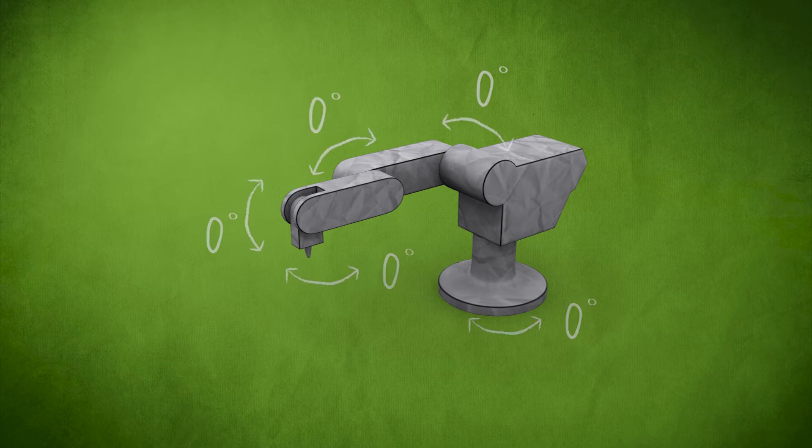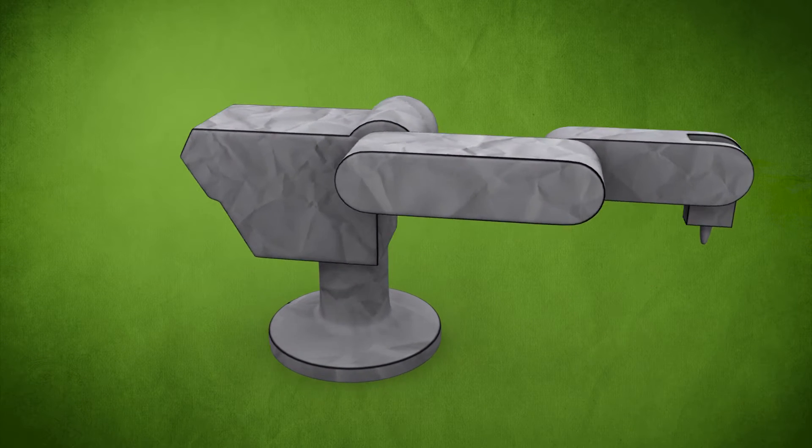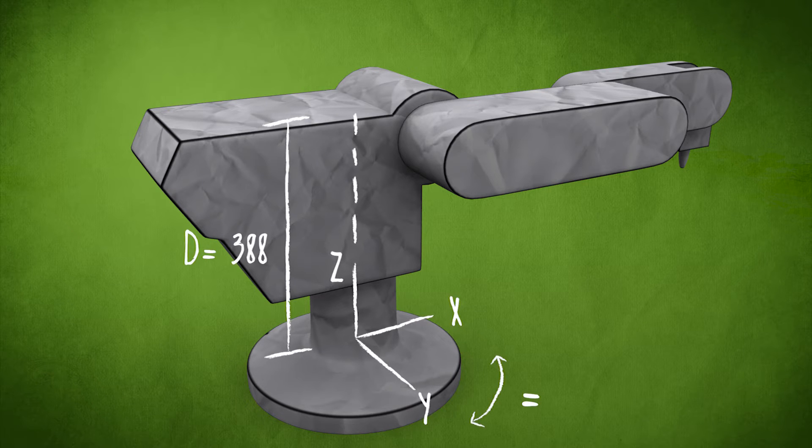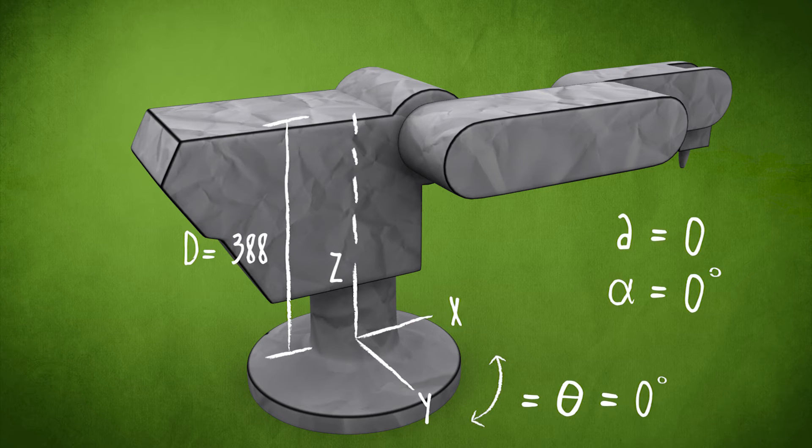To compute forward kinematics, we must first model all the joints mathematically. First, we place an origin at the robot's base, with the z-axis pointing along the axis of rotation. The distance measured along the z-axis becomes d, the joint angle for the z-axis is theta, and the remaining values of a and alpha are zero for this link.